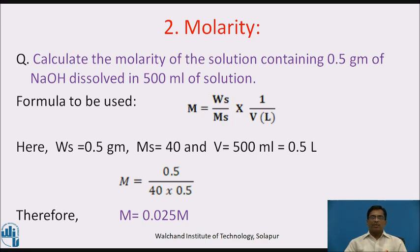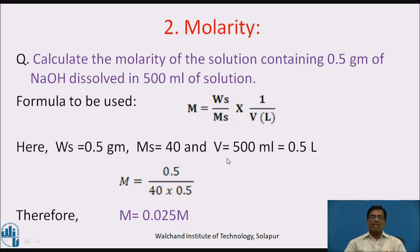Molarity numerical: Calculate the molarity of the solution containing 0.5 grams of sodium hydroxide dissolved in 500 ml of solution. Formula: M = weight / (molecular weight × volume in liters). Given: weight = 0.5 grams, molecular weight = 40, volume = 500 ml = 0.5 liters. Putting all values: M = 0.5 / (40 × 0.5) = 0.025 M. The molarity of the sodium hydroxide solution is 0.025 molar.